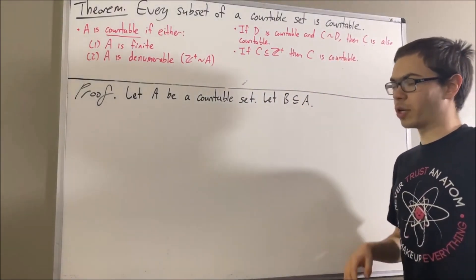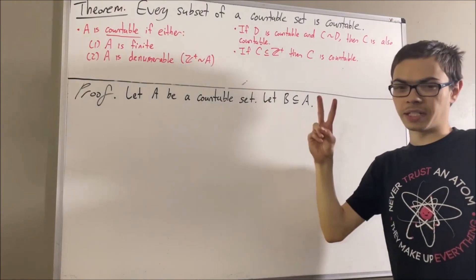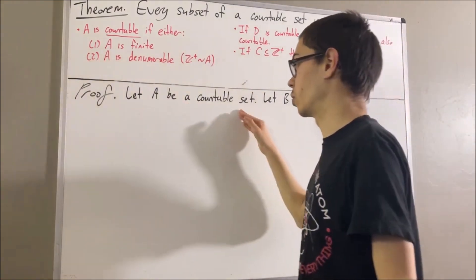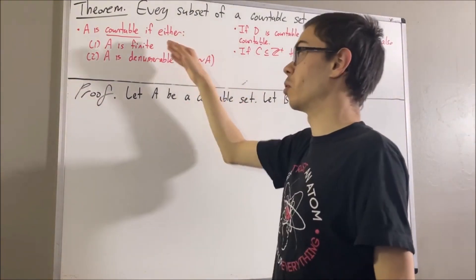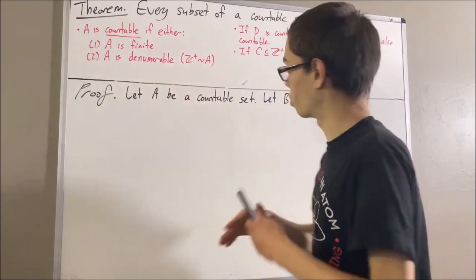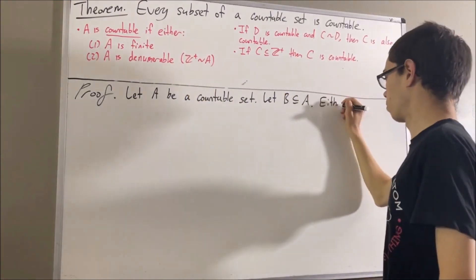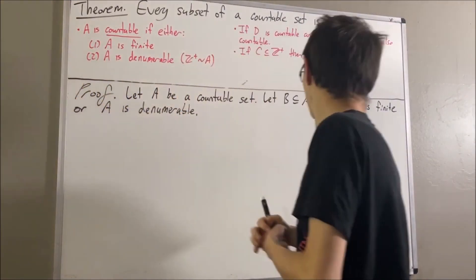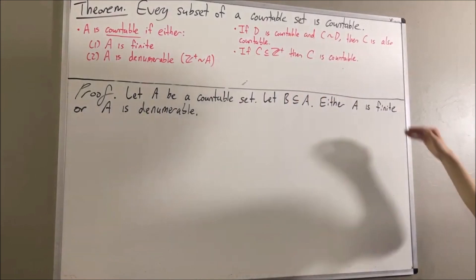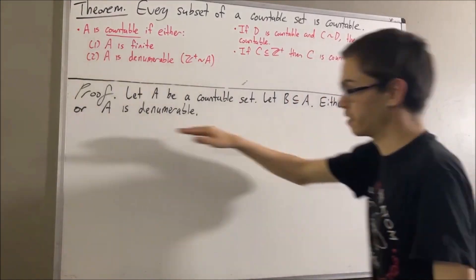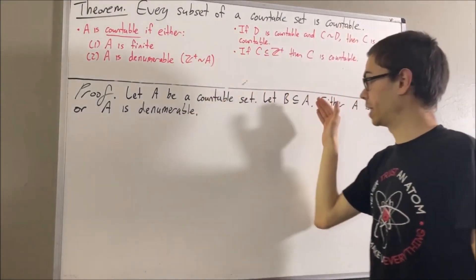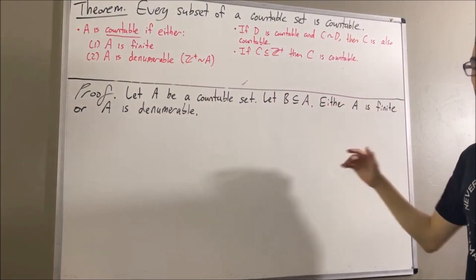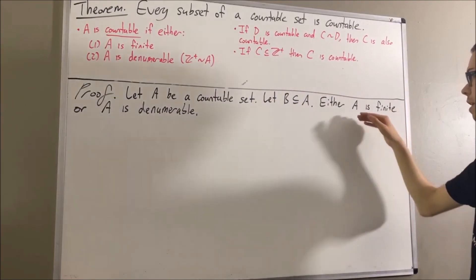To do so, we're going to break this up into two cases. Since A is countable, we have that either A is finite or A is denumerable. We're going to prove that in either case, B is countable. Let's start with case one, where A is finite.